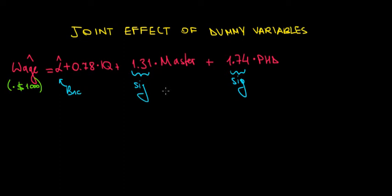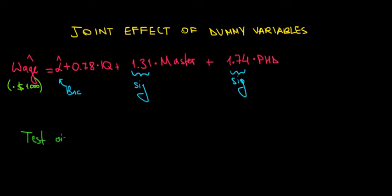But what if we want to test whether the education level is significant overall? What if we want to test if education affects wages in general? In that case, we want to know whether the Master, PhD, and bachelor's degree together all have an effect on wages — meaning we want to test a joint effect. When we want to test for a joint effect, we do so with an F test.